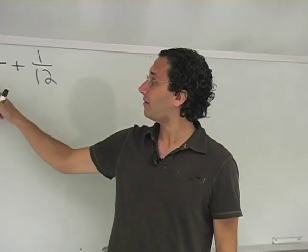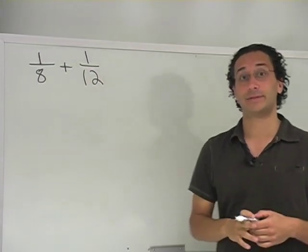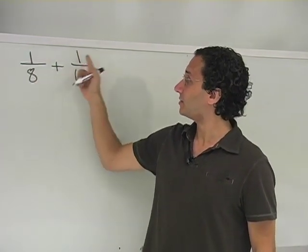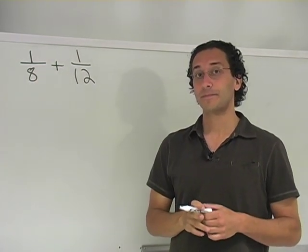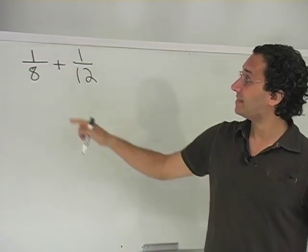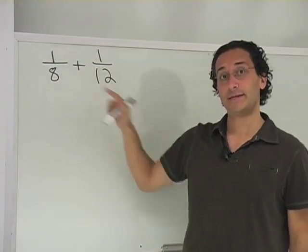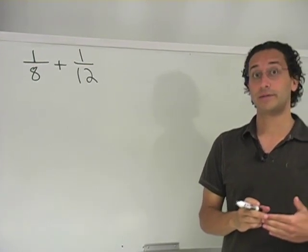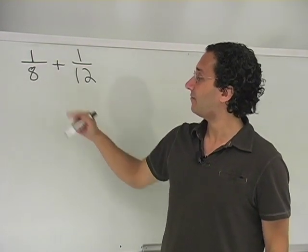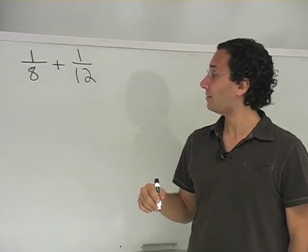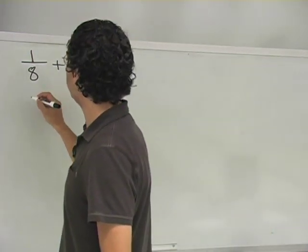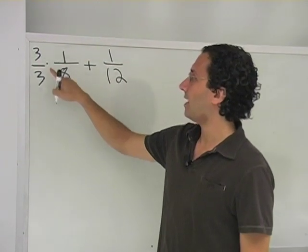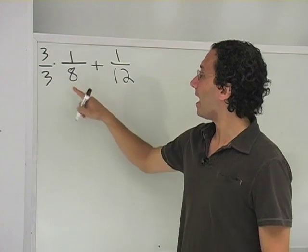It's tough to think of, but what we can do is think of these two in apples-to-apples terms. So instead of thinking of an eighth and a twelfth, what I'm going to realize is that both of these guys divide into 24. So instead of thinking of this as 1/8, I could think of it as just multiplying by a fancy version of one.